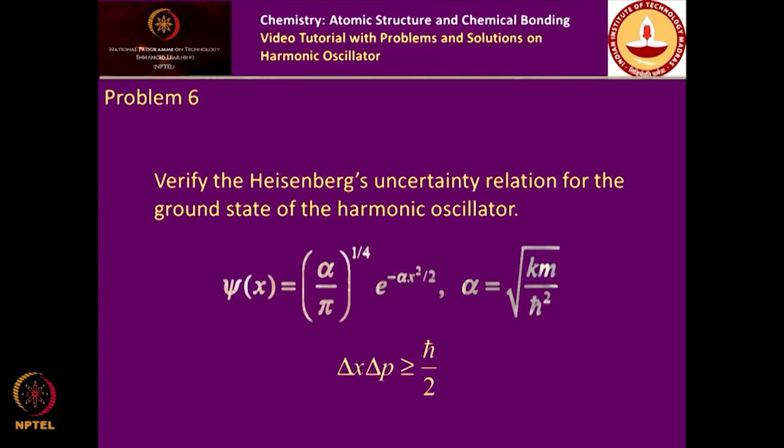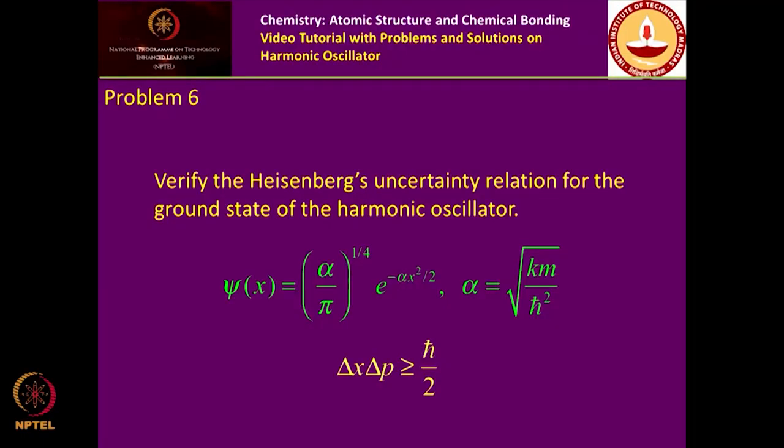Problem 6: verify the Heisenberg uncertainty relation for the ground state of the harmonic oscillator. All the integration elements needed have already been done, and we find that Δx·Δp is exactly equal to ħ/2. The ground state of the harmonic oscillator is called the minimum uncertainty state.